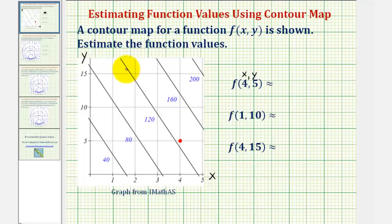And notice how it's very close to the contour line where the function value would be 120. And notice how we have the contour line of 160 here, so our estimate would be a little bit more than 120, let's say 125.